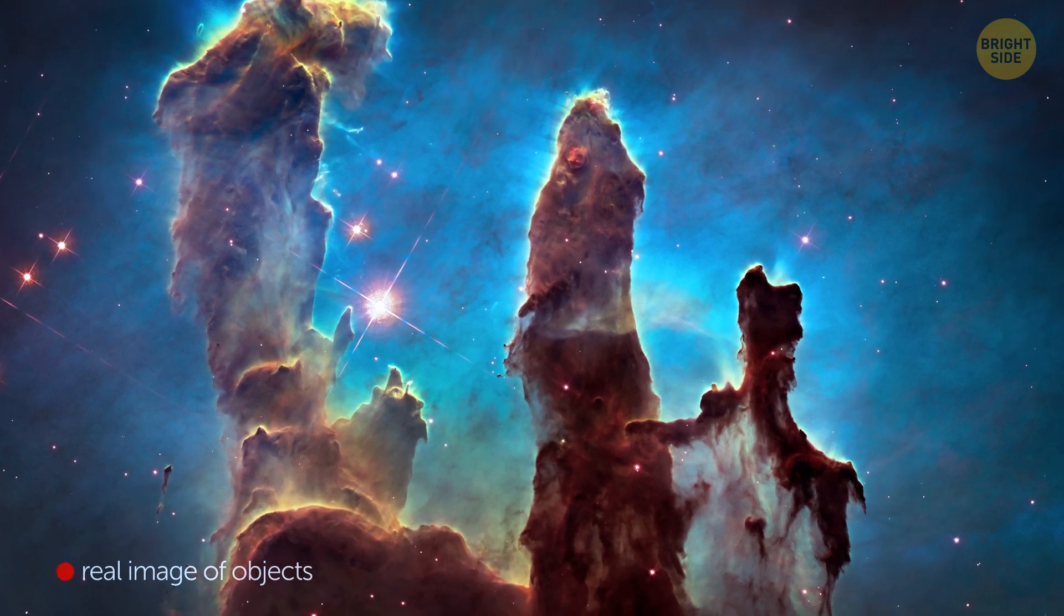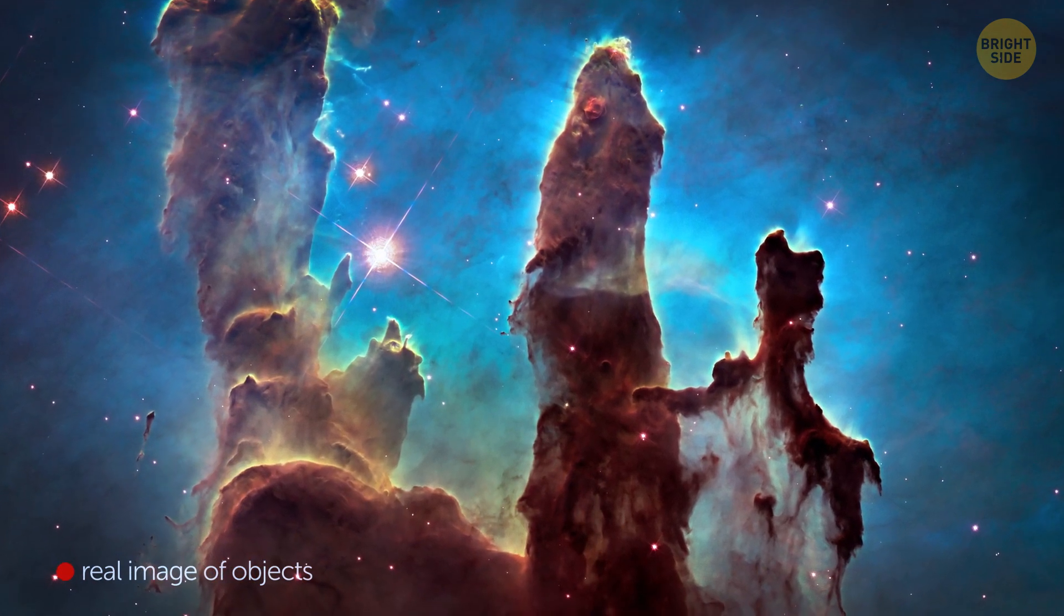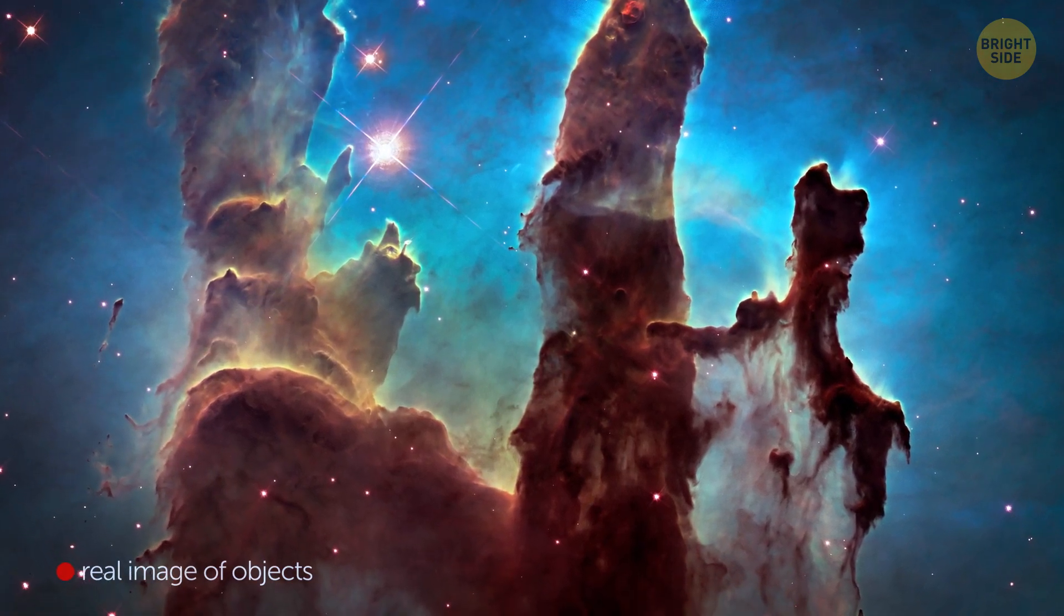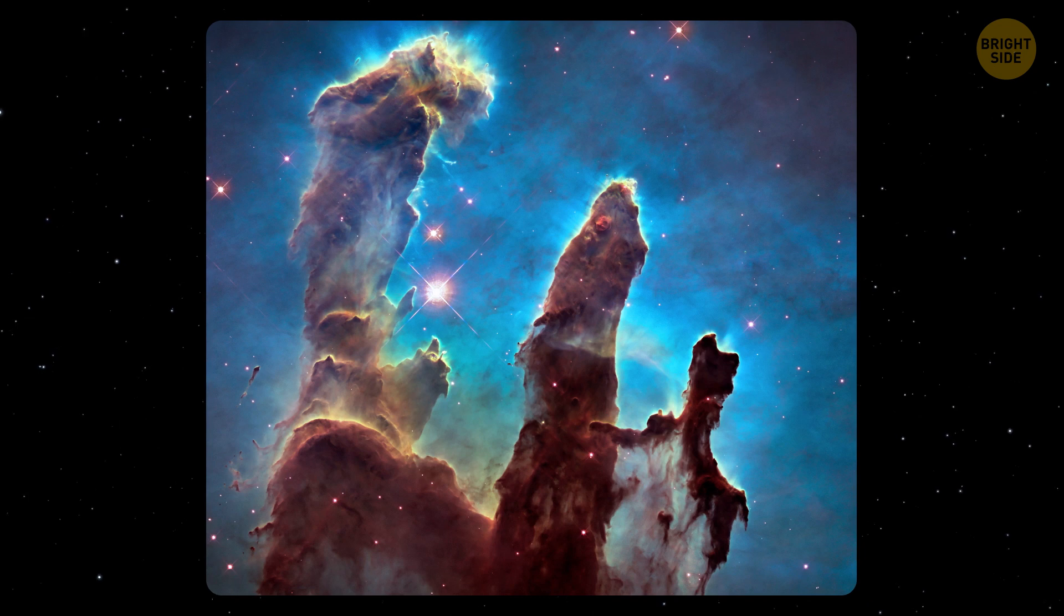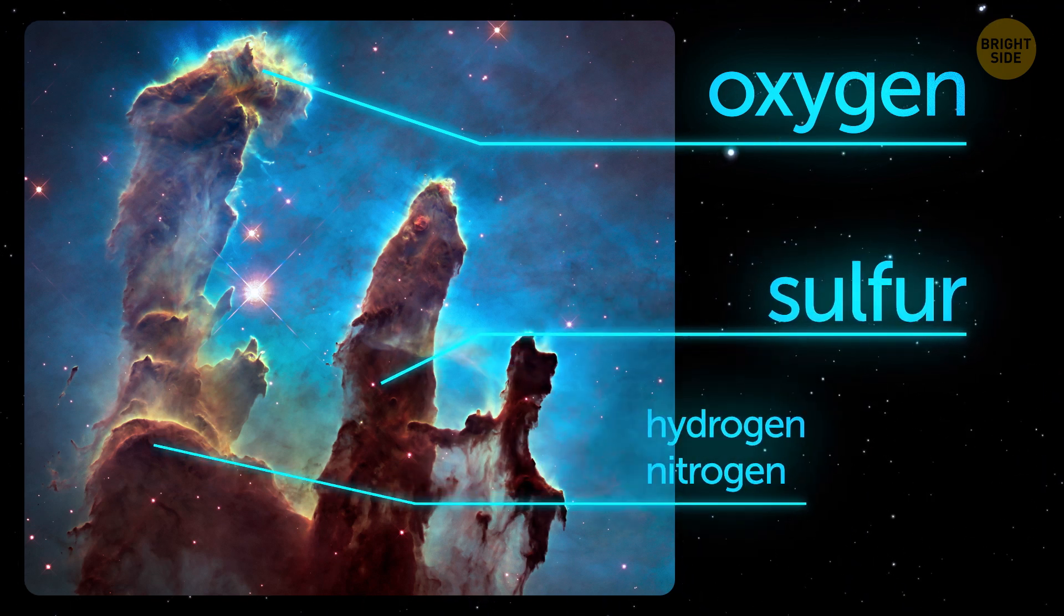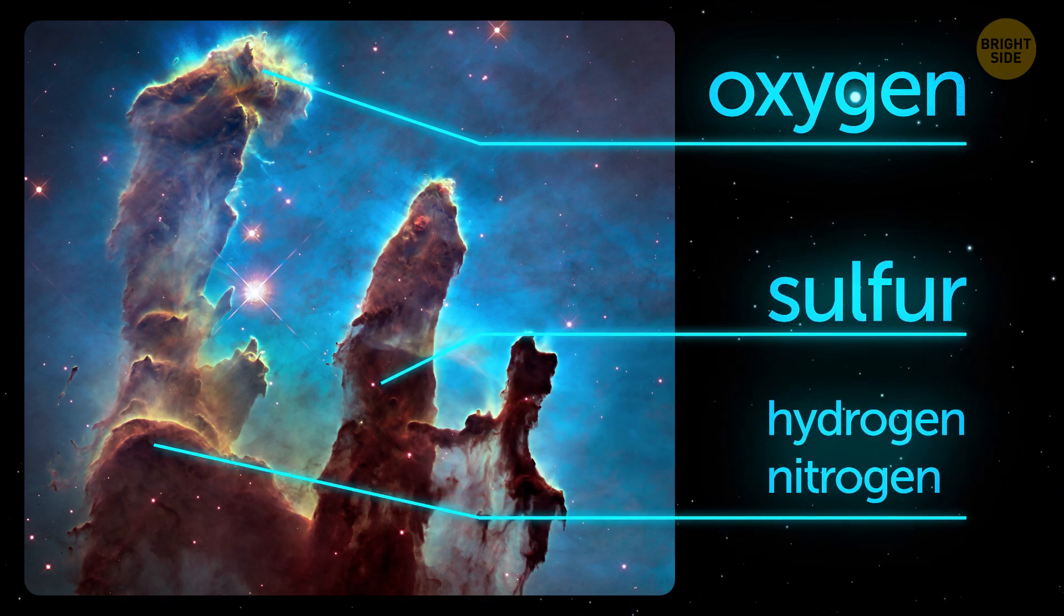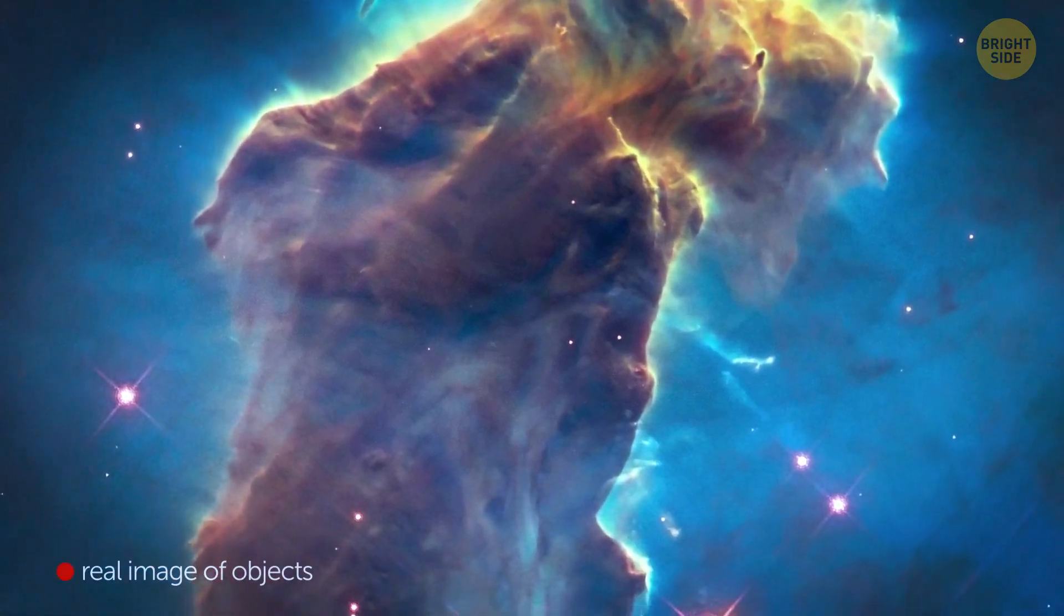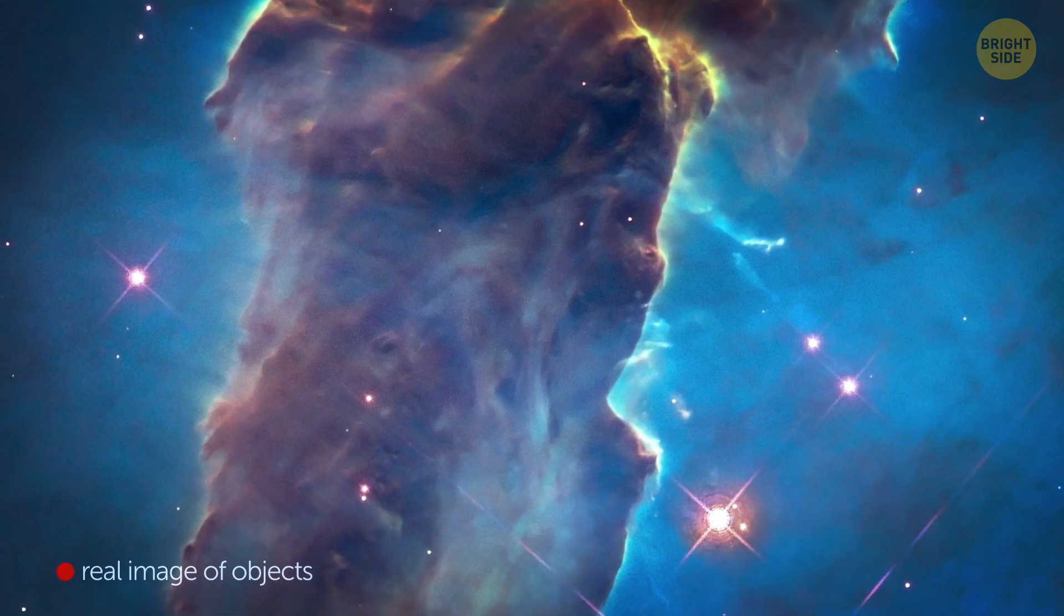And now, you can see them with your own eyes. Those are the so-called pillars of creation, an active star-forming region. Look at this famous image. The blue colors represent oxygen, red is sulfur, and green means the presence of both hydrogen and nitrogen. The pillars are also bathed in the ultraviolet light coming from a nearby cluster of young stars.